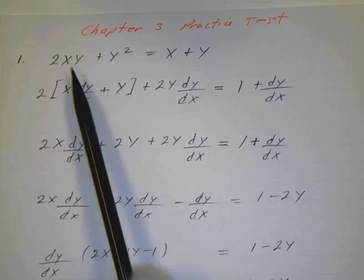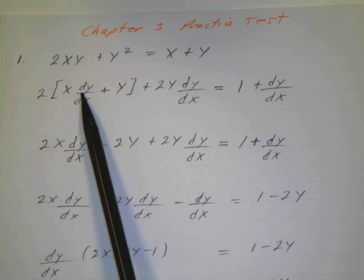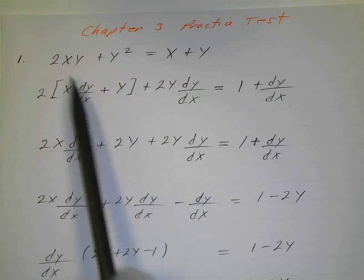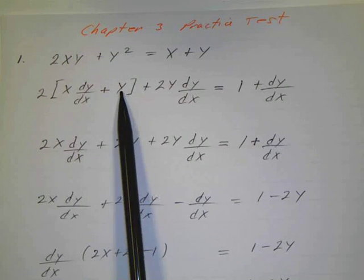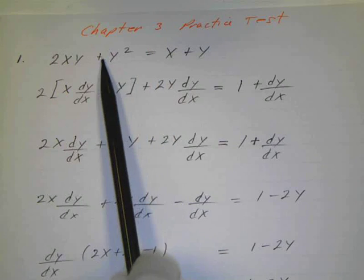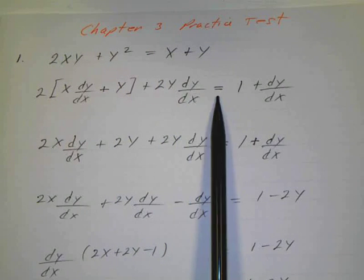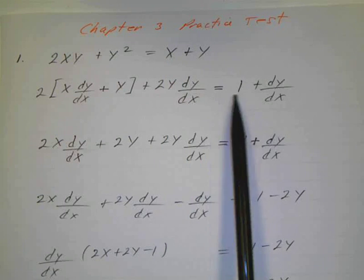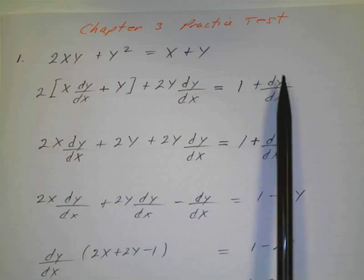The first is x, and the derivative of the second is dy/dx, plus the second, which is y, times the derivative of the first, which is dx/dx. And that's all preceded by a 2. Then we have to take the derivative of the next term, which is going to be 2y dy/dx, equals the derivative of x is just 1, and the derivative of y is just dy/dx.